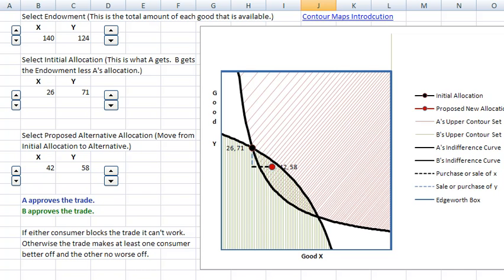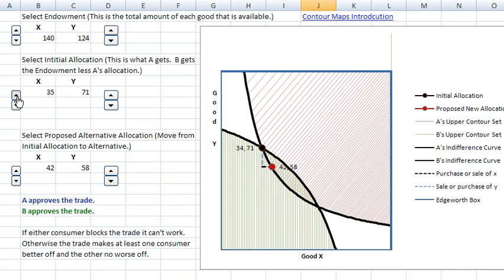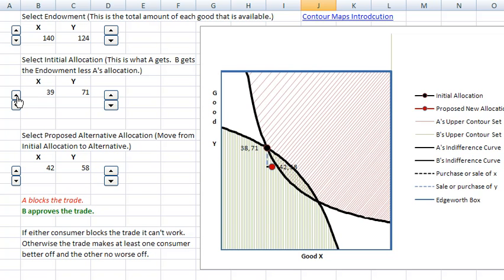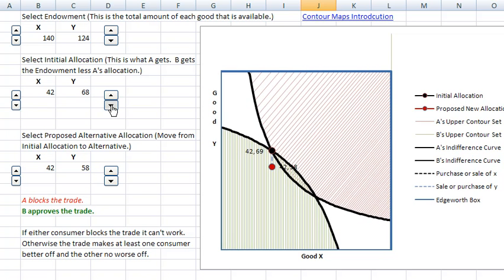And there. So let's propose 4258. Now, what I'm going to do is actually set the initial allocation to the proposed one. So I'm going to set this to 42. And we got the 42 part. And let's make this 58.